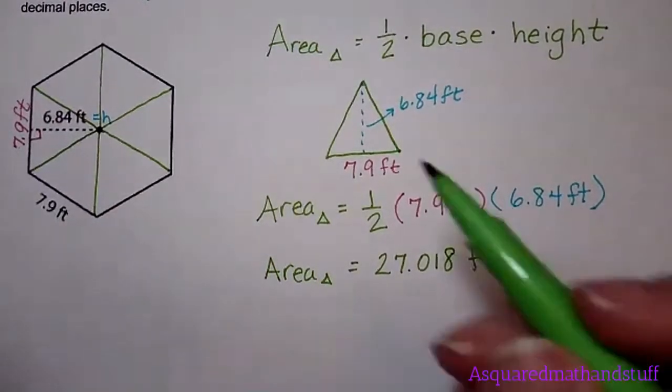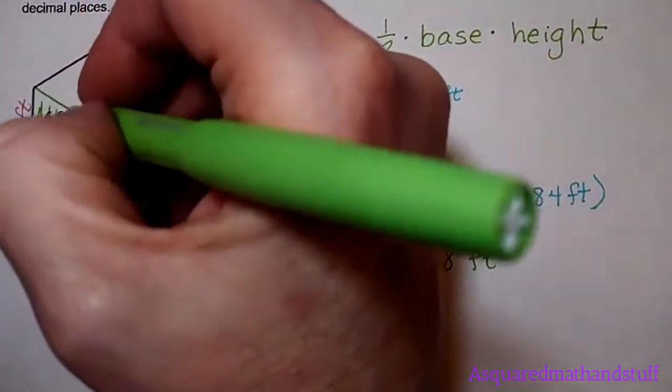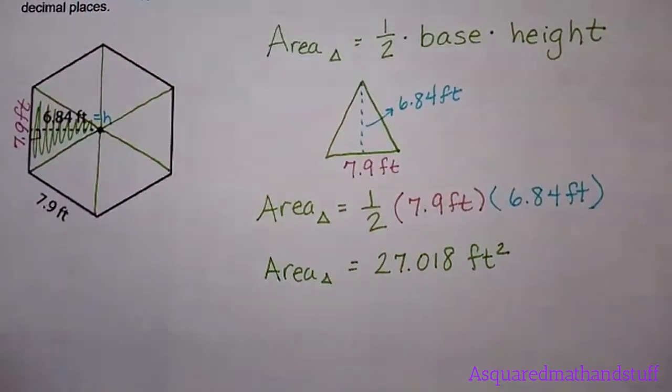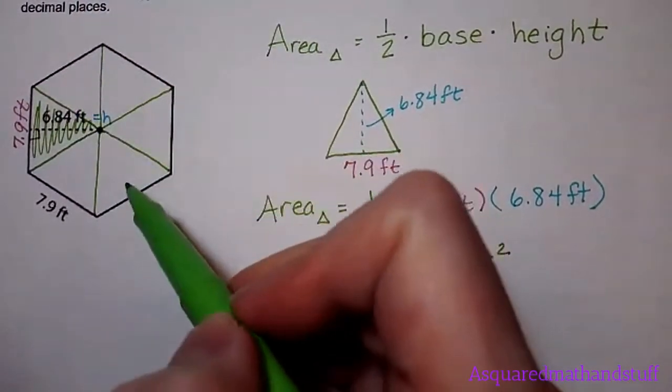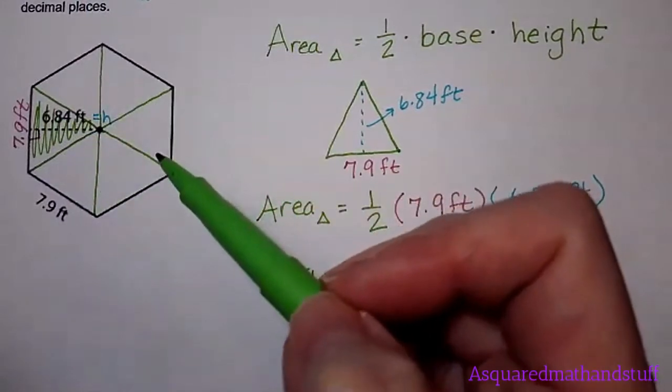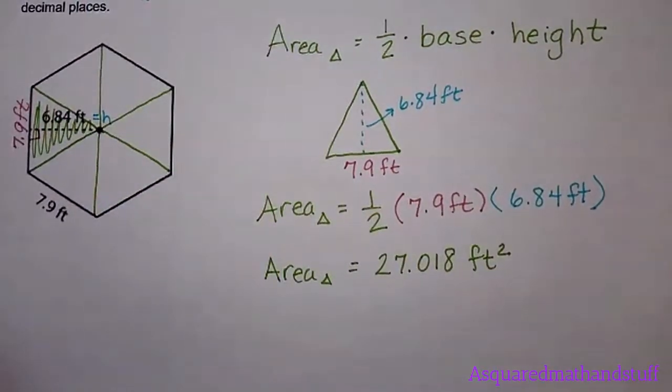So this 27.018 feet squared is the area of this single triangle here. So now what we have to do is just multiply it by the number of triangles. Well, there's six triangles in here because we have six sides.